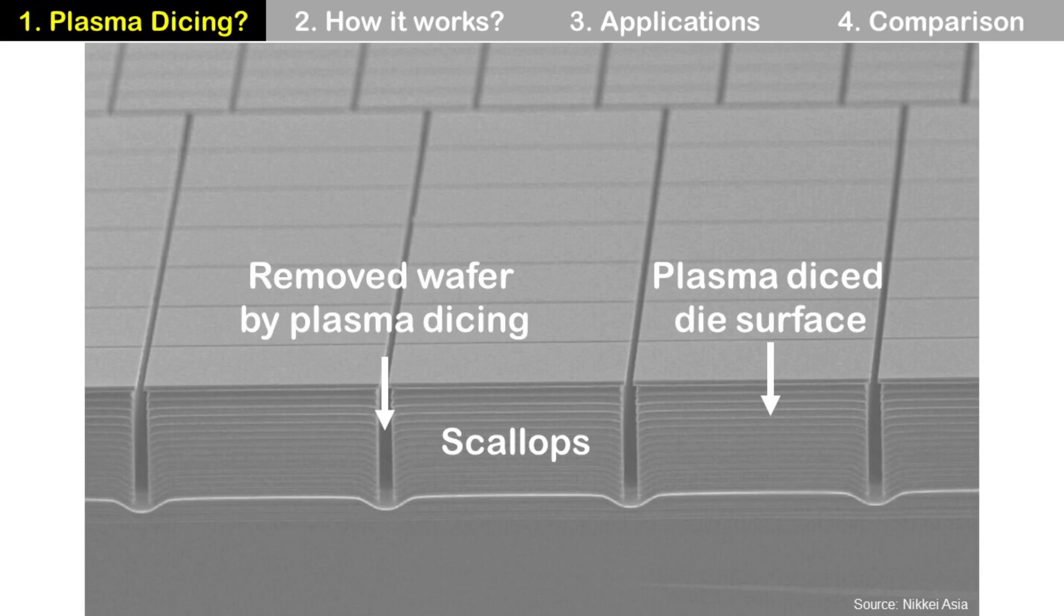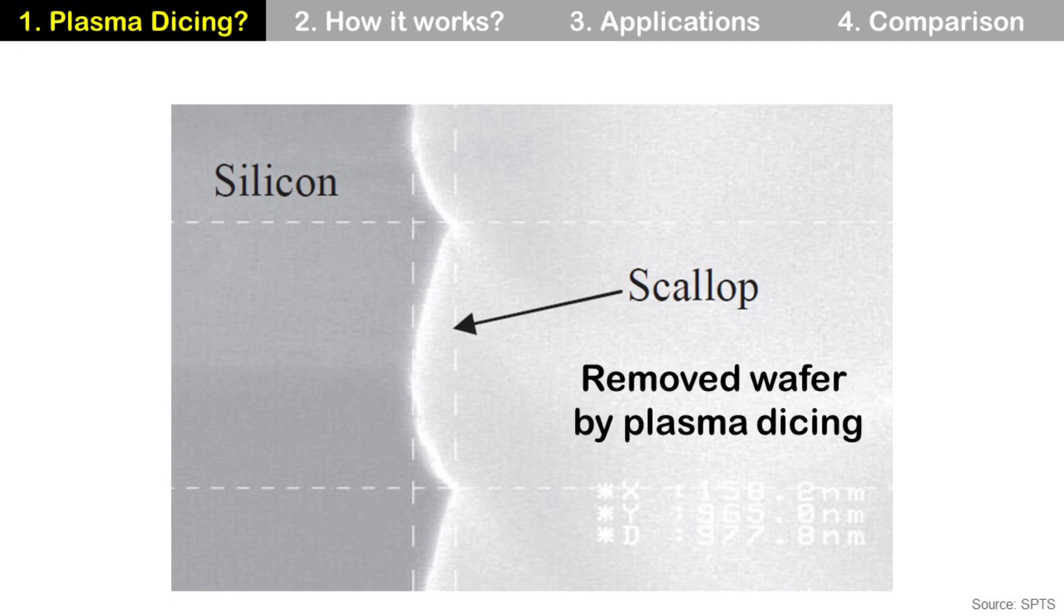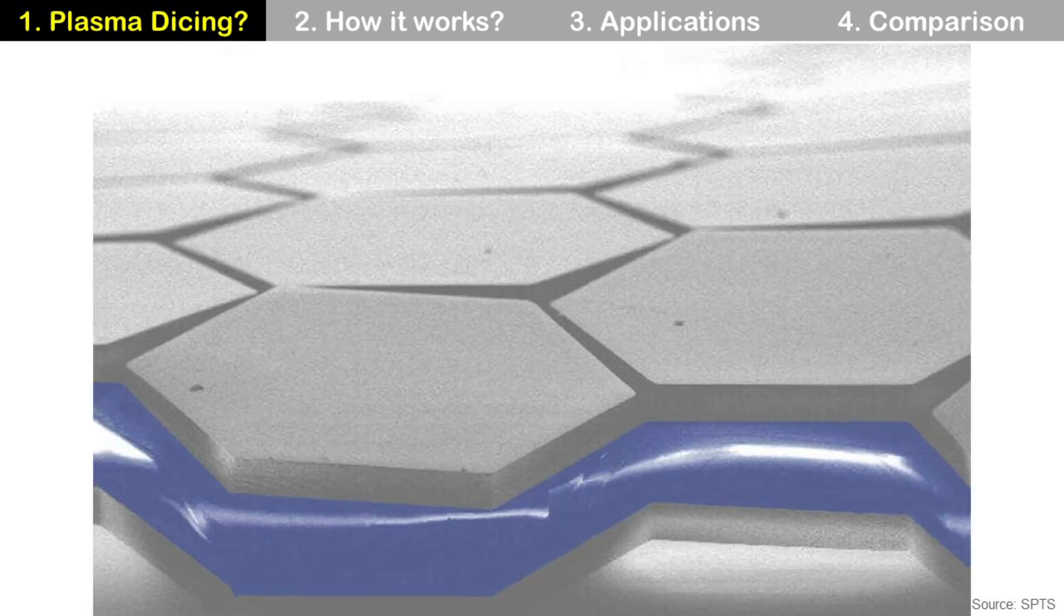You can also see some patterns at the side of some dies, made by Plasma Dicing. These patterns are called Scallops. If you zoom in, it looks like this, and the size of scallop is determined by process parameters. Also, Plasma Dicing can be used to dice non-rectangular shapes, for example, hexagonal shape dies, which is not possible by blade dicing.